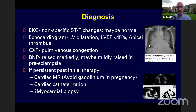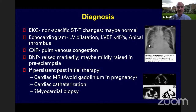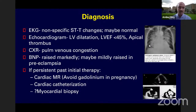BNP levels in PPCM are markedly raised unlike in preeclampsia. Other investigations can rule out structural heart disease; myocardial biopsy is rarely required unless specific myocarditis is suspected. Incidence varies widely: 1 in 200 in Nigeria, 1 in 2,500 live births in the US/Canada, 1 in 20,000 in Japan, and approximately 1 in 1,400 in India. Risk factors include African-American race (3–16 times higher risk), preeclampsia or pregnancy-induced hypertension, maternal age above 40, and multi-gestational pregnancies.